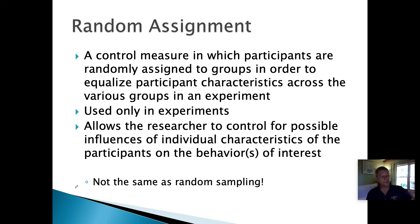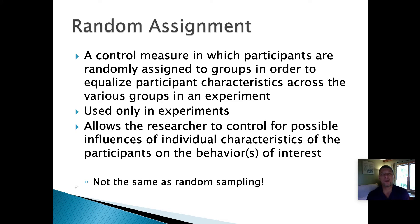You'll have the same number of males and females in each group, the same number of people of different body types, heights, and whatever other characteristics you want to control for. By randomly assigning participants, you can eliminate those characteristics as issues in your experiment. This is one of the benefits of an experiment — you can control for the influences of individual characteristics on the behavior you're measuring.